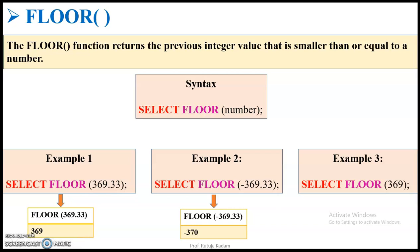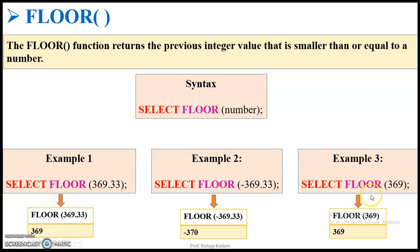If I give a whole number as input to the floor function, it will return the same number itself — for example, it will return 369 because the number provided is already an integer.